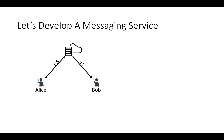However, this connection is not end-to-end encrypted. Each message will be decrypted by the server and re-encrypted by the server, which means the server can see all messages sent by Alice and Bob. So here comes our first problem statement: end-to-end encryption.